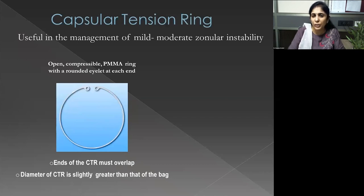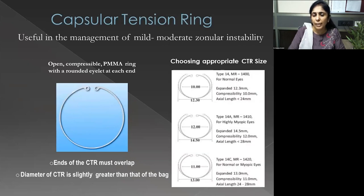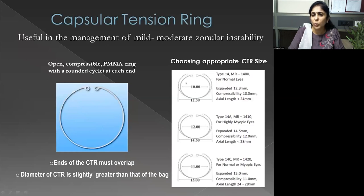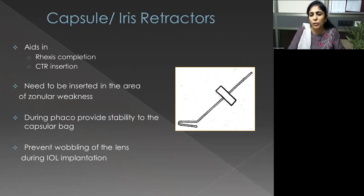After the rhexis is complete, plan for devices. The two most important are the capsule tension ring (CTR) and hooks. The CTR comes with eyelets that just cross when placed in the capsular bag. Based on capsular bag size, different CTR sizes are available: 11-13 for most cases, 12-14.5 for myopes, and 10-12.5 for nanophthalmos or spherophakic lenses.